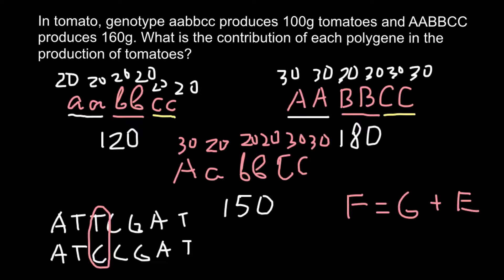So a polygene is an allele that adds something to a trait, but only to a small extent, and many different genes also add to the trait. You have to distinguish such polygenes from epistatic genes, which influence a trait by up-regulating or down-regulating other genes. Epistatic genes regulate the production of other proteins or enzymes and affect the trait indirectly, but a polygene affects the trait directly. We call such genes additive genes — they add something to the trait.